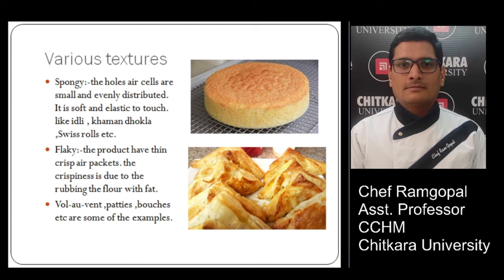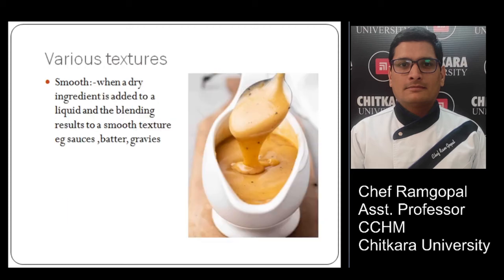Flaky texture means the product has thin crisp air packets. The crispiness is due to rubbing flour with fat, like vol-au-vents, patties, and puffs. Smooth texture means when a dry ingredient is added to a liquid and blending results in a smooth texture, like sauces, batters, and gravies. As you see in the picture, this sauce has a very smooth consistency.